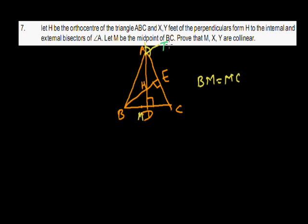Let AT be the angle bisector of the external angle A. The perpendicular from point H to AT meets it at Y, so HY is perpendicular to AT. The perpendicular from H to the internal angle bisector of angle A meets it at X. Join AM — since M is the midpoint of BC, AM is the median of triangle ABC.